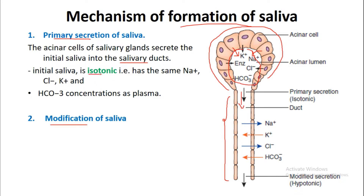The initial saliva is isotonic, meaning it has the same sodium, chloride, potassium, and bicarbonate concentration as that of the plasma. In the second phase, modification of the saliva occurs, meaning the composition of these substances will change.